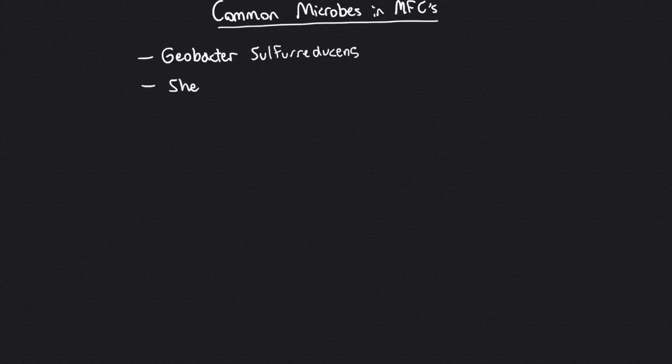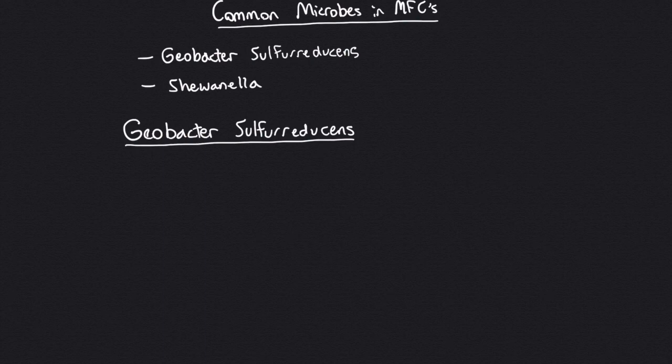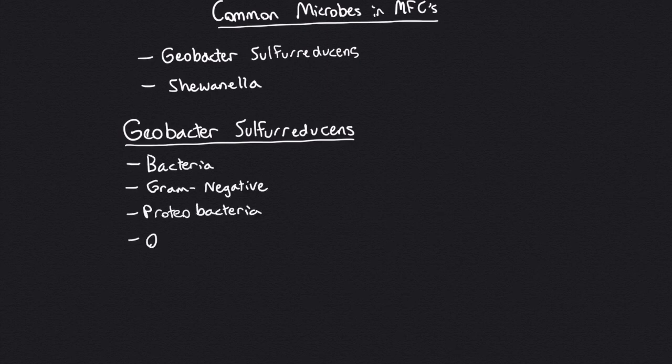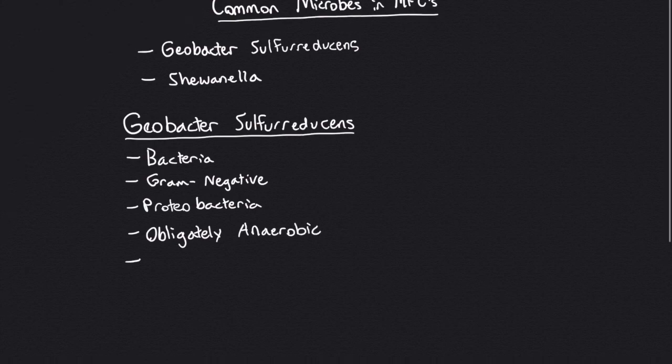Two common species in microbial fuel cells are Geobacter sulfurreducens and Shewanella. Today, I will be focusing on Geobacter sulfurreducens because it is more common in microbial fuel cells. Geobacter sulfurreducens is a gram-negative proteobacterium which is obligately anaerobic, meaning that it cannot survive in high oxygen conditions.